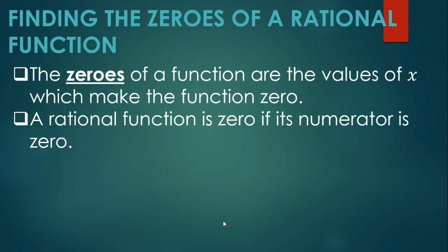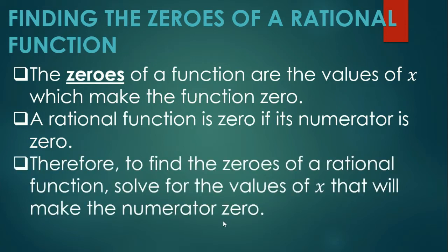So, ibig sabihin, in obtaining the zeros of a rational function, we try to look for the possible values of the variable in the numerator that will make the numerator equal to zero. Therefore, to find the zeros of a rational function, solve for the values of x that will make the numerator equal to zero.